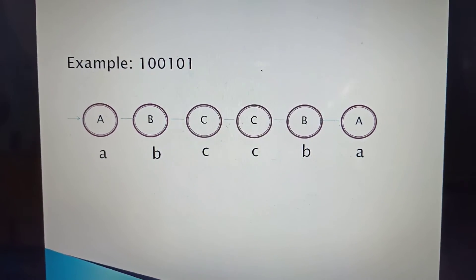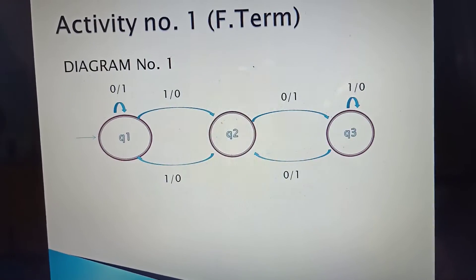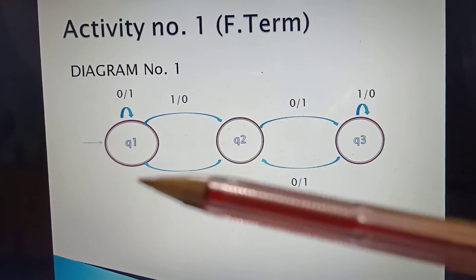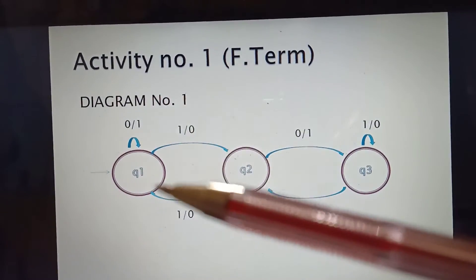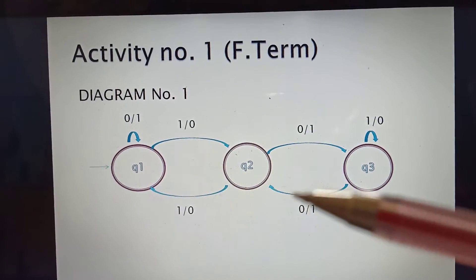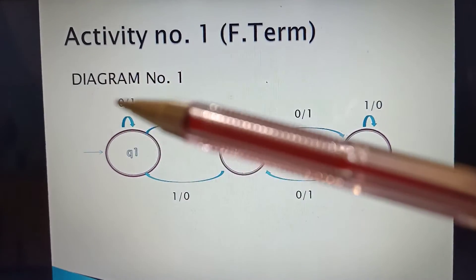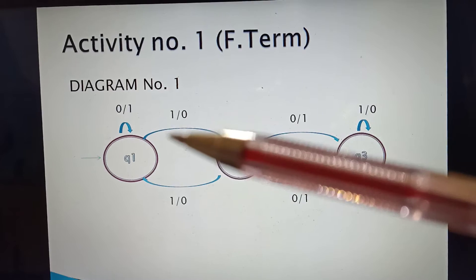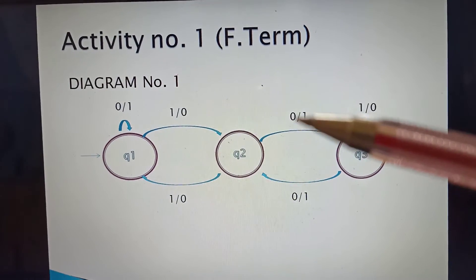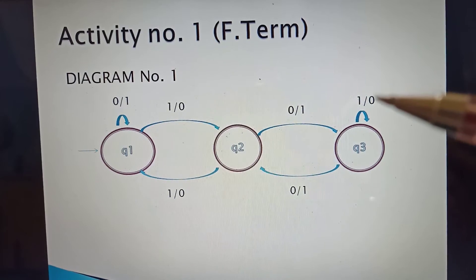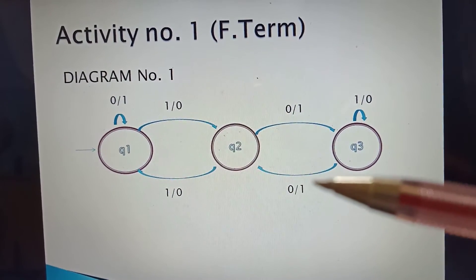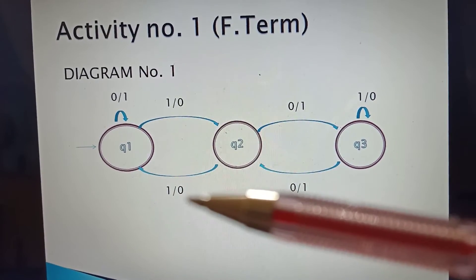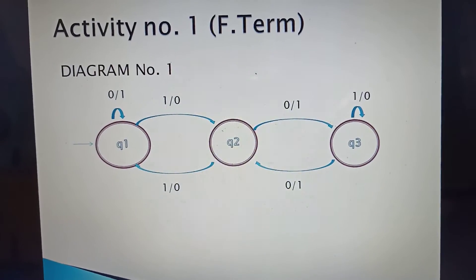Let's make some activity for the Mealy machine and Moore machine — activity number 1 for the final term. We have a diagram with three states Q1, Q2, and Q3. If Q1 has input 0, it produces output 1; input 1 produces output 0. Similarly for the other states: input 0 produces output 1, and input 1 produces output 0.